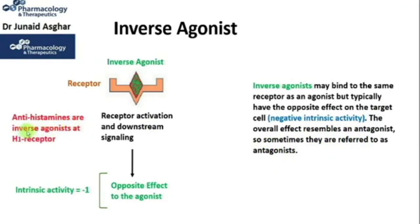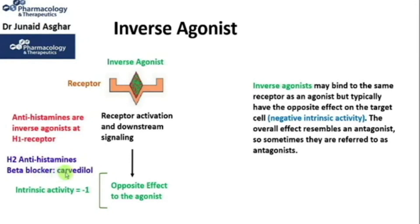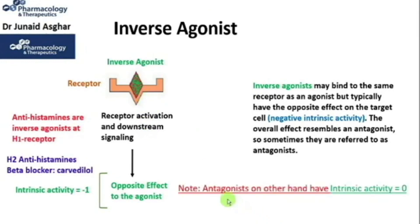Antihistamines are basically inverse agonists at H1 receptors. Several drugs conventionally classified as antagonists — for example, H2 antihistamines and beta blockers — have shown inverse agonist effects on their corresponding receptors. Among beta blockers, carvedilol demonstrates low levels of inverse agonism. By definition, an antagonist would just block an agonist at the receptor site and will not possess any intrinsic activity. This is how we distinguish between an antagonist and an inverse agonist: the intrinsic activity of an inverse agonist is minus 1, whereas the intrinsic activity of an antagonist is 0.